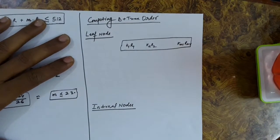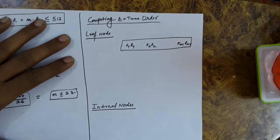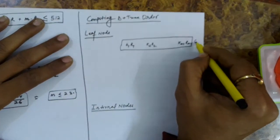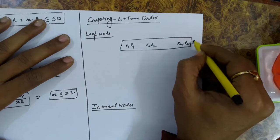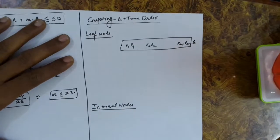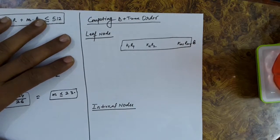Now we link up every leaf node with each other, which means we need to have the address of the next node. The address of the next node is the address of a block — one node is stored in a disk block, another node is also stored in a disk block. So if we are referring to the address of the next node, that is a block address.